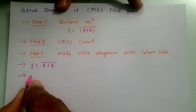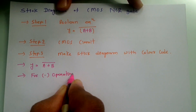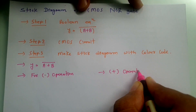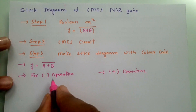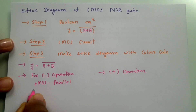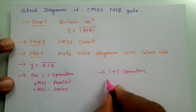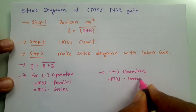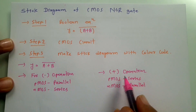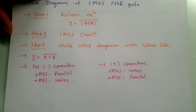For CMOS circuit implementation, there are two operations: dot operation (AND) and plus operation (OR). For AND operation, PMOS connections are in parallel and NMOS connections are in series. This is what we need to keep in mind when connecting a CMOS circuit. Now let me give you a basic circuit introduction of CMOS.